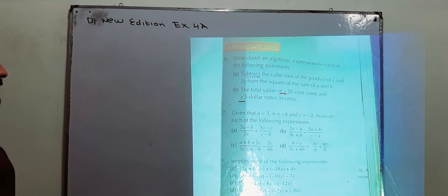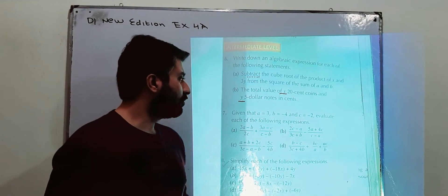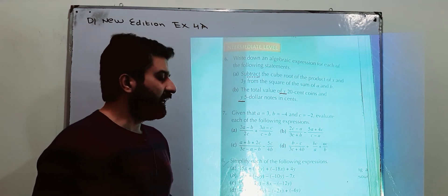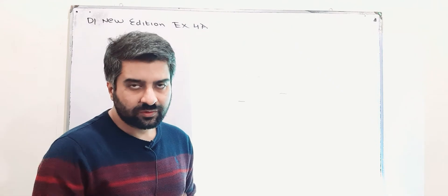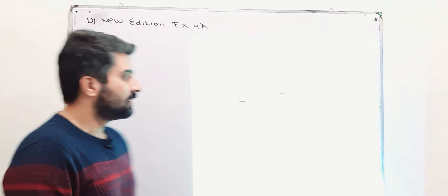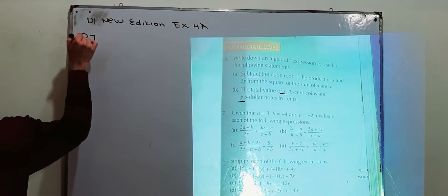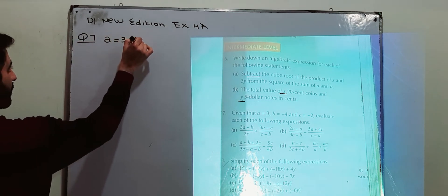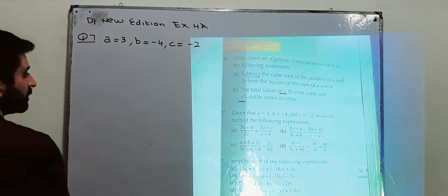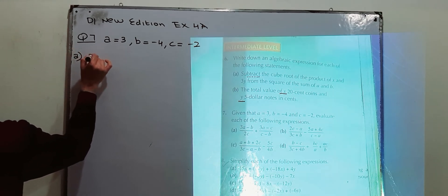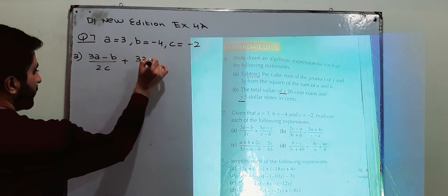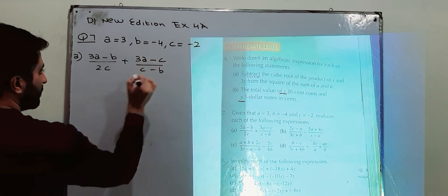Question number 7: given that A is 3, B is minus 4, C is minus 2, evaluate each of the following expressions. We have to find the value of each expression using the given values of A, B and C. Part A is: (3A minus B) over (2C) plus (3A minus C) over (C minus B).